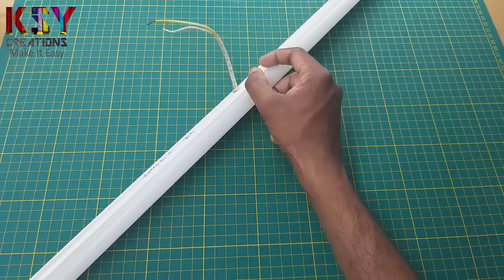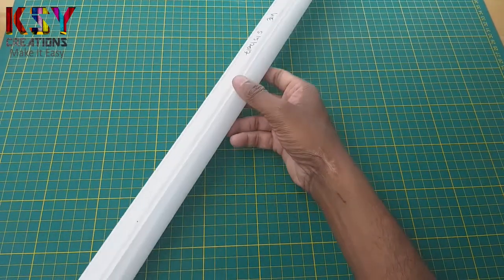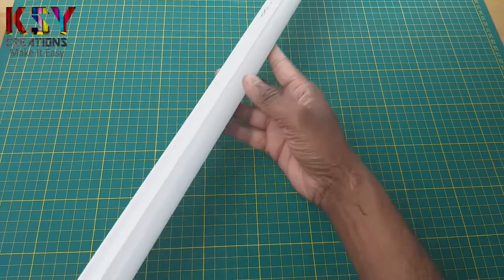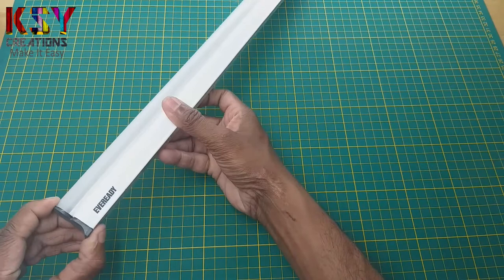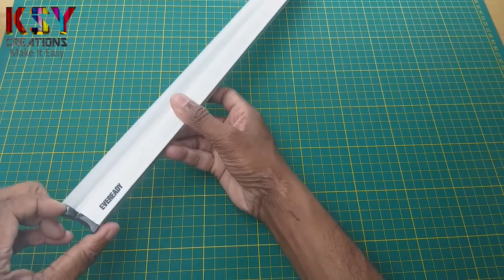First I will remove the LED strip and circuit from this tube light. For this, we need to remove this side cover.